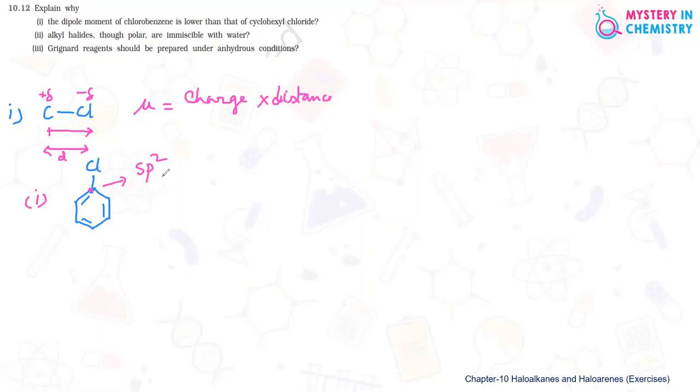When it is sp2 hybridized, it is more electronegative carbon. Because of this more s character, the bonding pair of electrons is more attracted by this carbon. When it is attracted by this carbon, the polarity is decreasing. Charge will be more only when the bonding pair of electrons is more towards chlorine. So when it is more towards sp2 carbon, the polarity is less, that means the charge is less. Charge separation and that charge magnitude will be less.